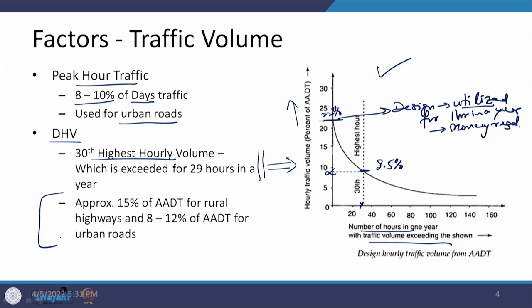In the case of rural highways, DHV can be considered as 15 percent of AADT, and in the case of urban roads it can be considered as 8 to 12 percent of AADT. This is how the DHV is determined.